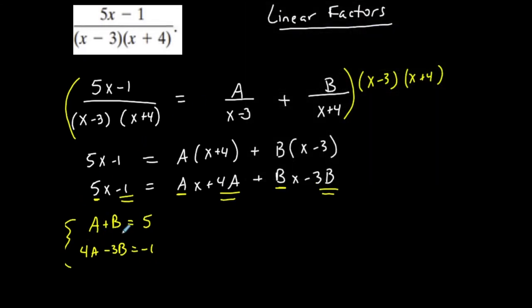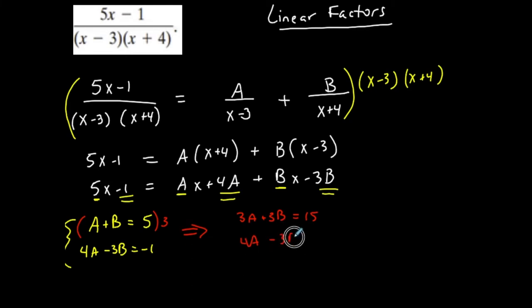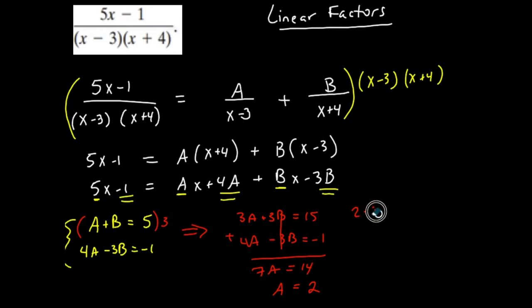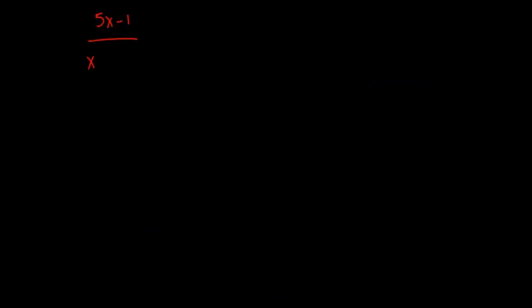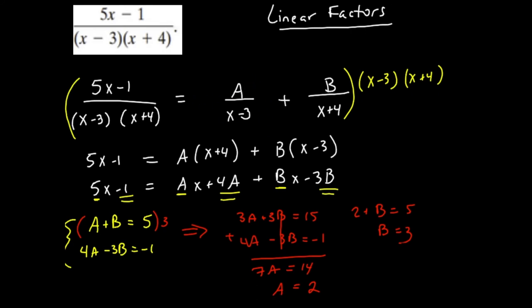I like elimination. I'll multiply the first equation by 3 to get 3A plus 3B equals 15. Adding that to 4A minus 3B equals negative 1, the B's cancel: 7A equals 14, so A equals 2. Once I have A, B is defined: 2 plus B equals 5, so B equals 3.